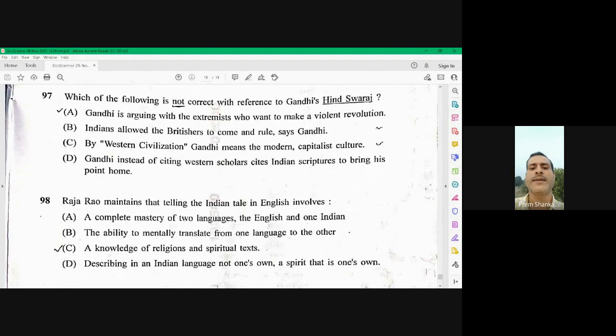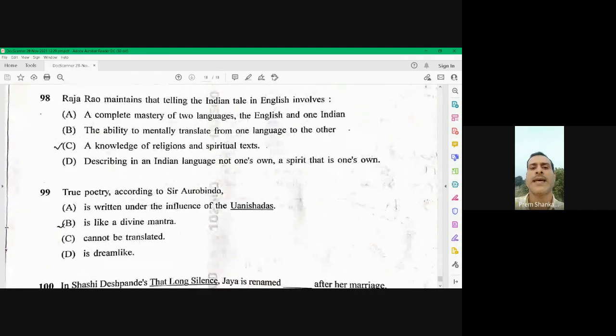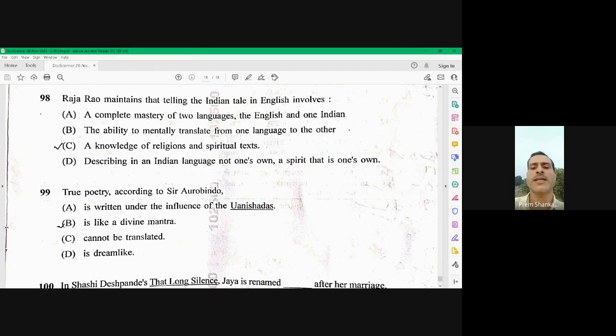Question number 98. Raja Rao maintains that telling the Indian tale in English involves, for 98 the right option is C, a knowledge of religions and spiritual texts. As you know in Kanta Pura, there is a description of Harikatha told by Jaya Ramachar. So a lot of religious and spiritual texts are mentioned. So 98 C is the right option.